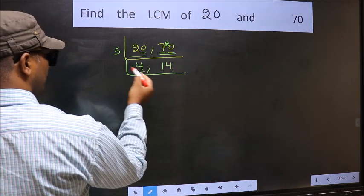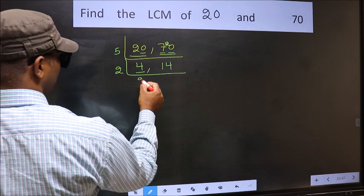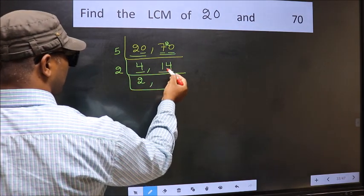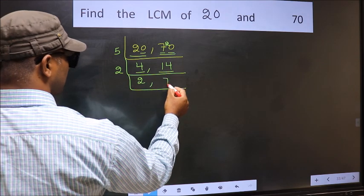Now here we have 4. 4 is 2 times 2 is 4. The other number 14. When do we get 14 in 2 table? 2 times 7 is 14.